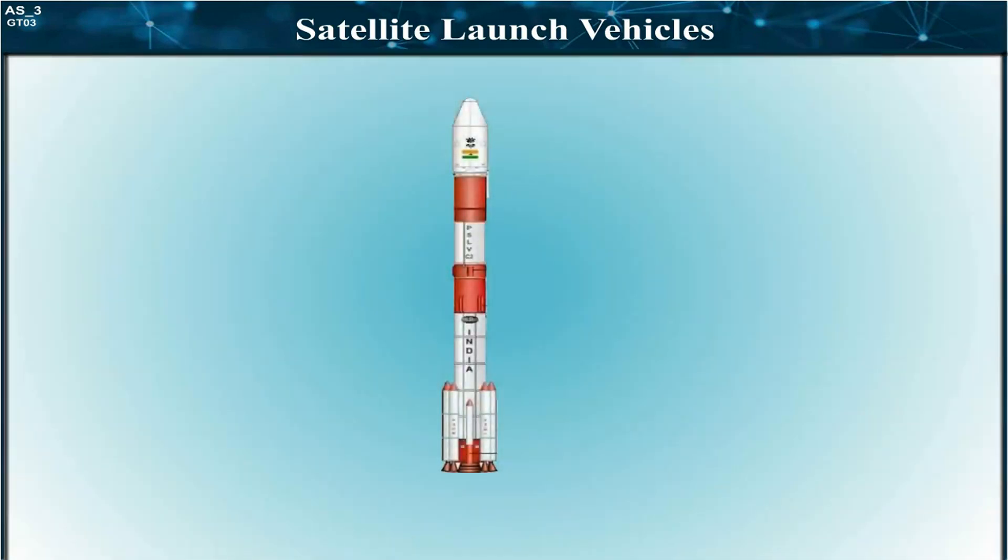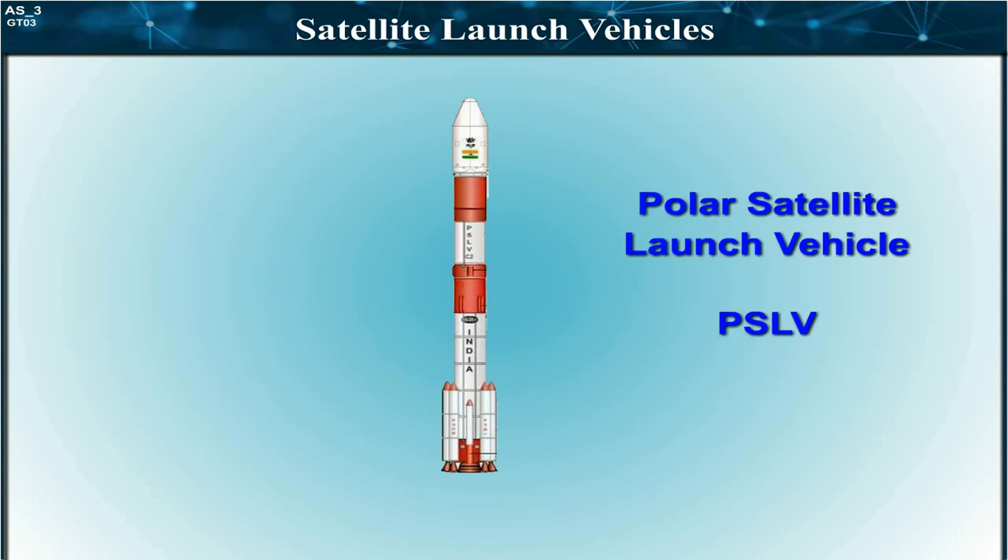Almost all vehicles are made of either two or more stages. As an example, the structure of a polar satellite launch vehicle, PSLV, developed by ISRO of India, is shown in figure.